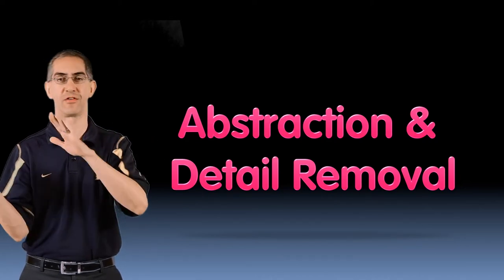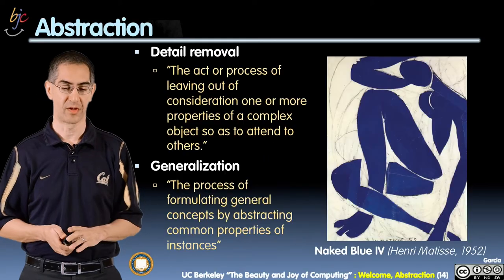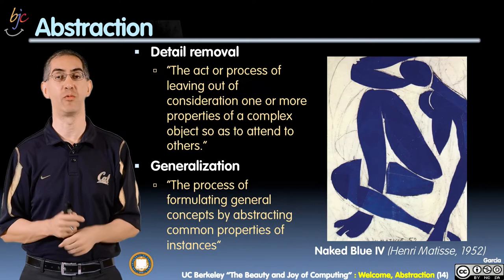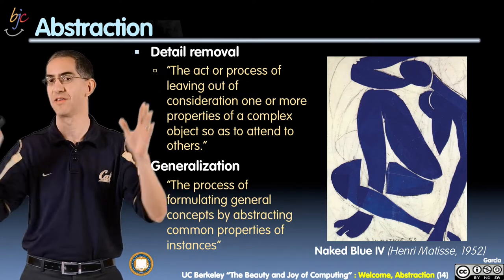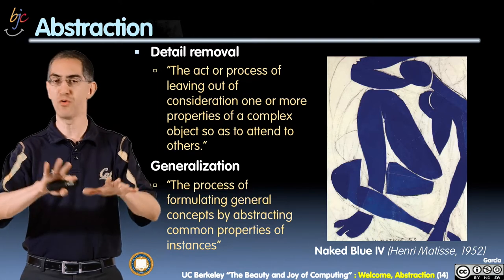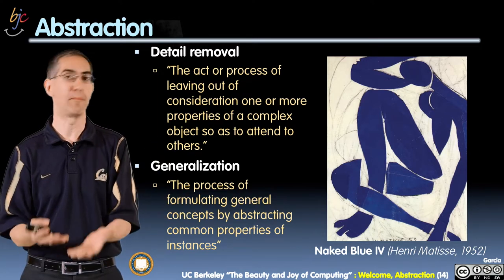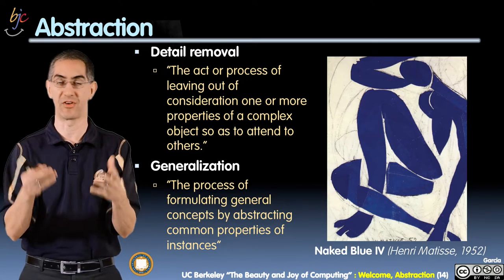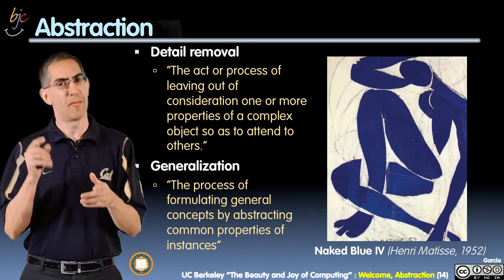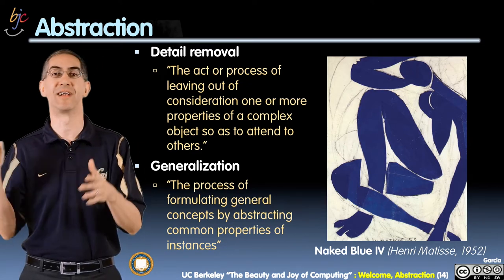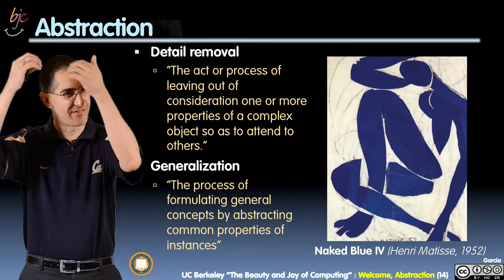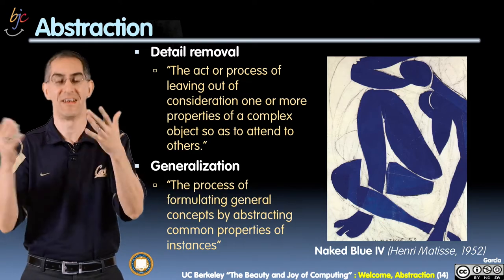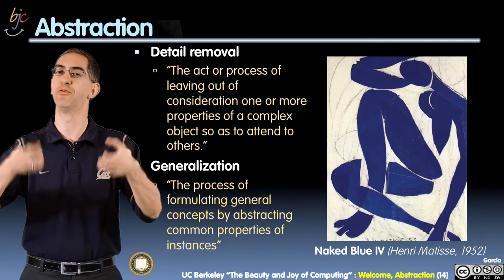We're going to talk about abstraction and two definitions, specifically detail removal. There are two definitions of abstraction used in computer science. One is detail removal — from 10 miles up, the idea is you want to remove the things that aren't important to what you're talking about. If I tell you a joke, I take only the salient parts. I don't say Bob is a 43-year-old middle-aged person from Kansas who parts his hair on the side. I just say a guy walks into a bar — I don't tell you all the details.